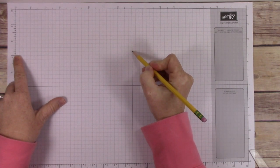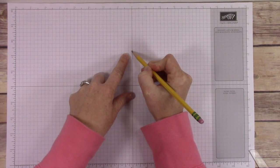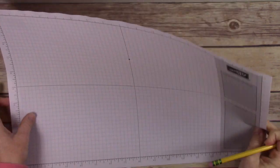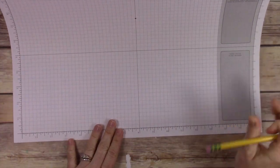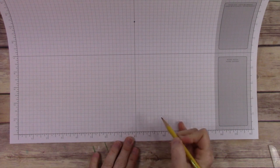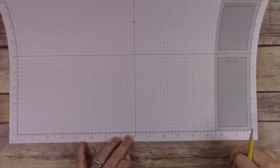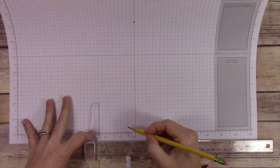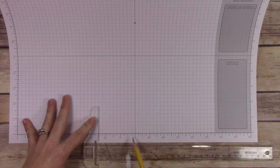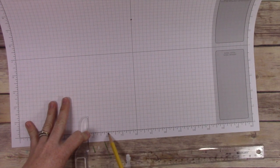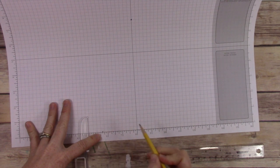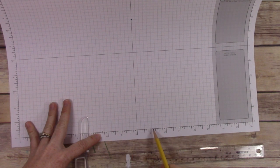At the bottom, you need to go two and three-eighths inch from each side of that center line. For me, it was just easy to do it this way, and that makes the bottom a total of four and three quarters. So you just go two and three-eighths and make a little mark, and then move your ruler over and make another little mark.